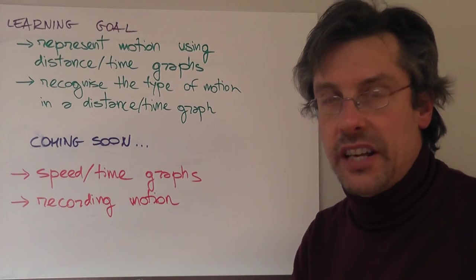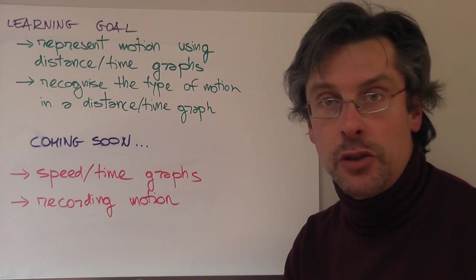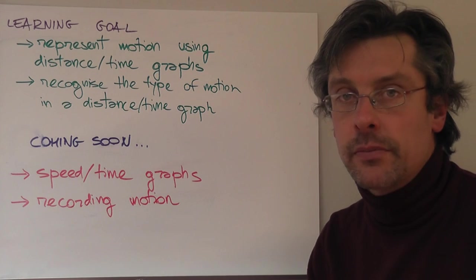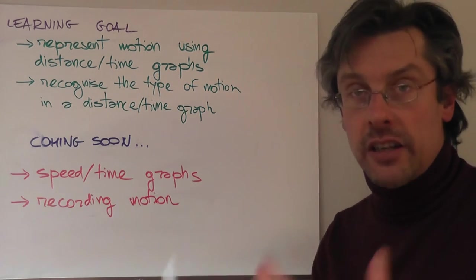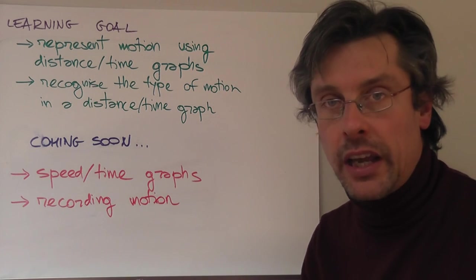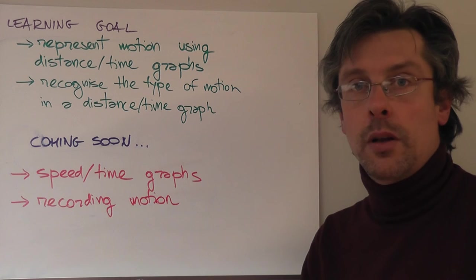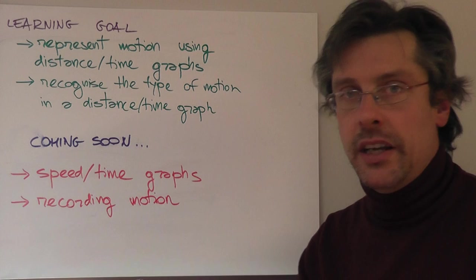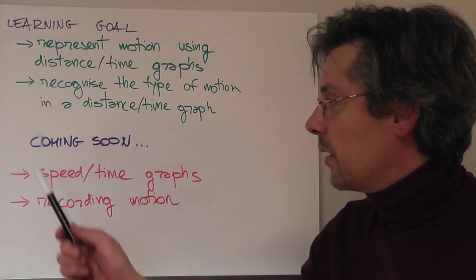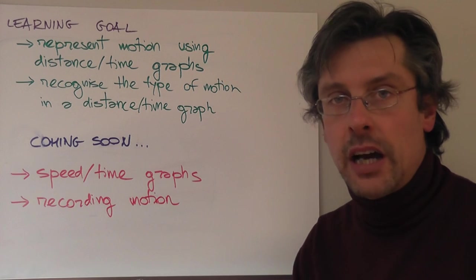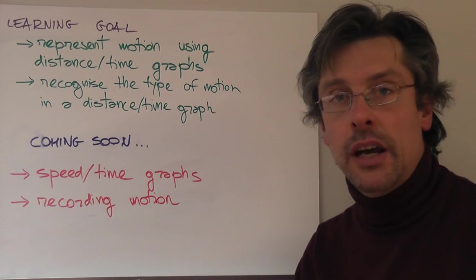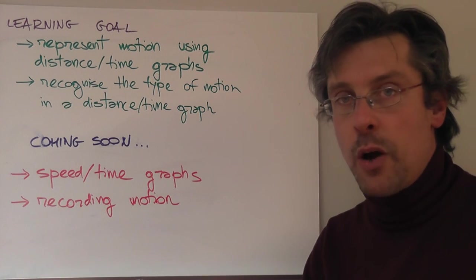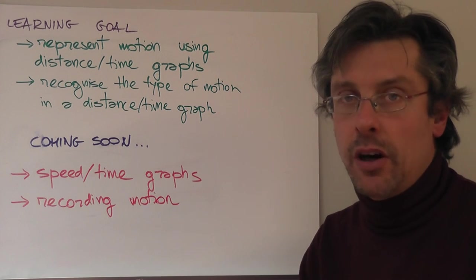So what was the learning goal of this lesson? By the end of this lesson, you should be able to represent the motion of an object using a distance time graph. You should also be able to recognize the type of motion of an object by looking at a distance time graph — making distance time graphs and reading distance time graphs. In the next lesson, we're going to see the other type of motion graph: speed time graphs. And finally, we're going to see how we can record the motion of an object and directly find the speed of a moving object.